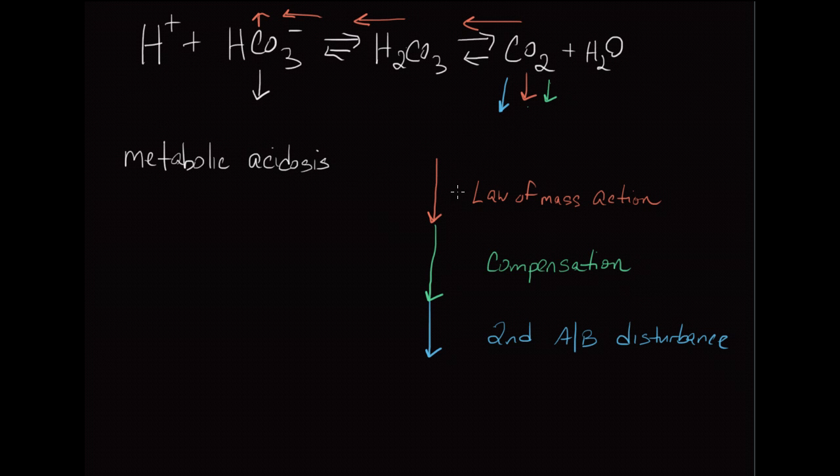If you have a healthy lung, then that lung will drop CO2 even further because it's trying to establish a pH where you can live. That's represented in the green - it's what we call compensation. But there are some times or instances where you not only have a primary metabolic acidosis but you have a primary problem in your lung causing you to drop CO2 even further than it should, and that's what we call a second acid-base disturbance.